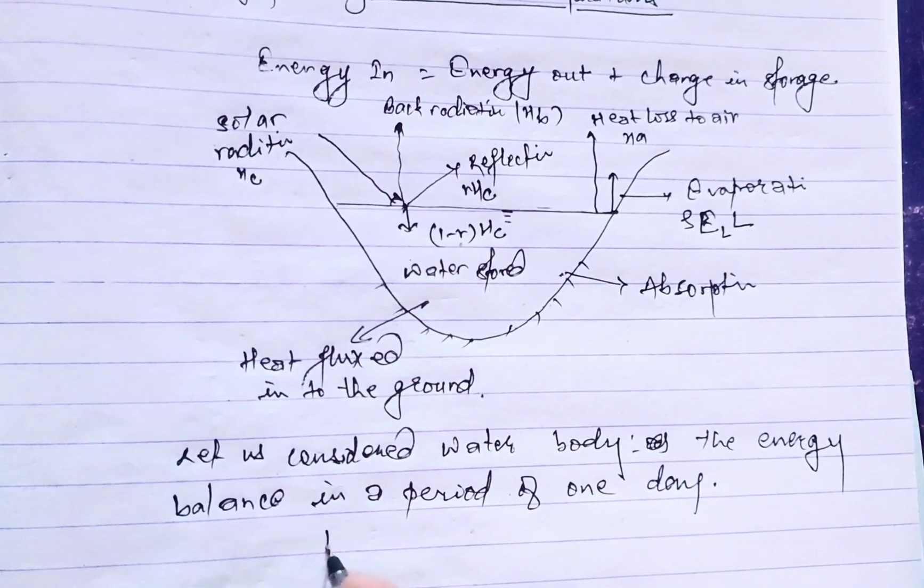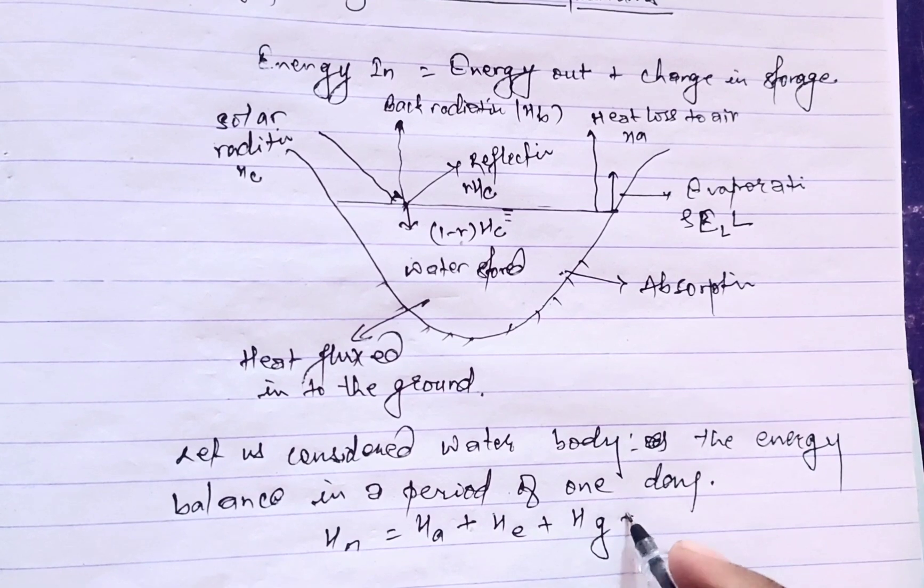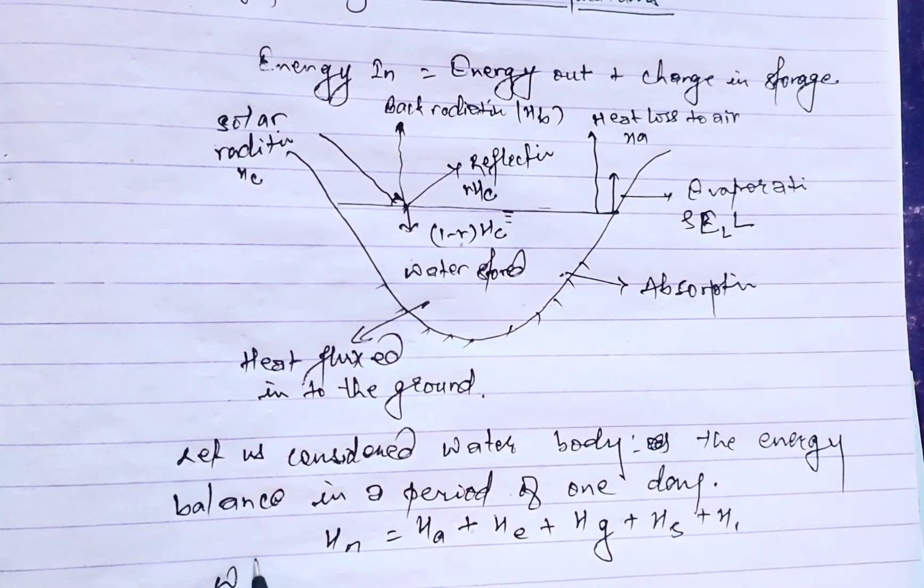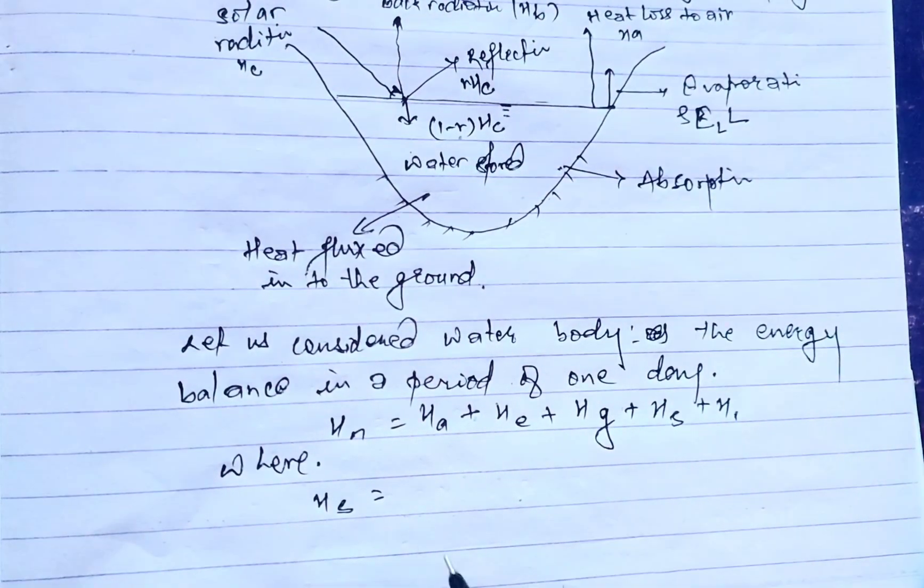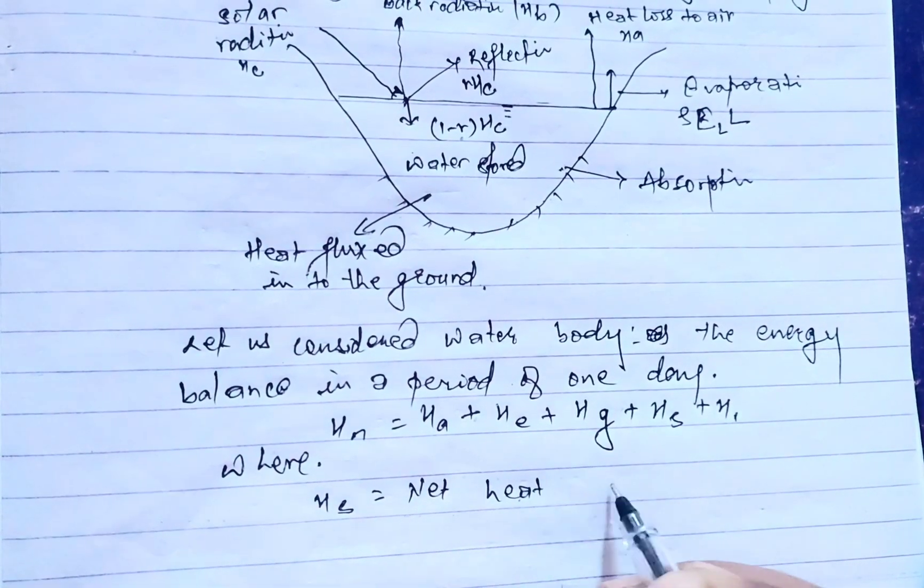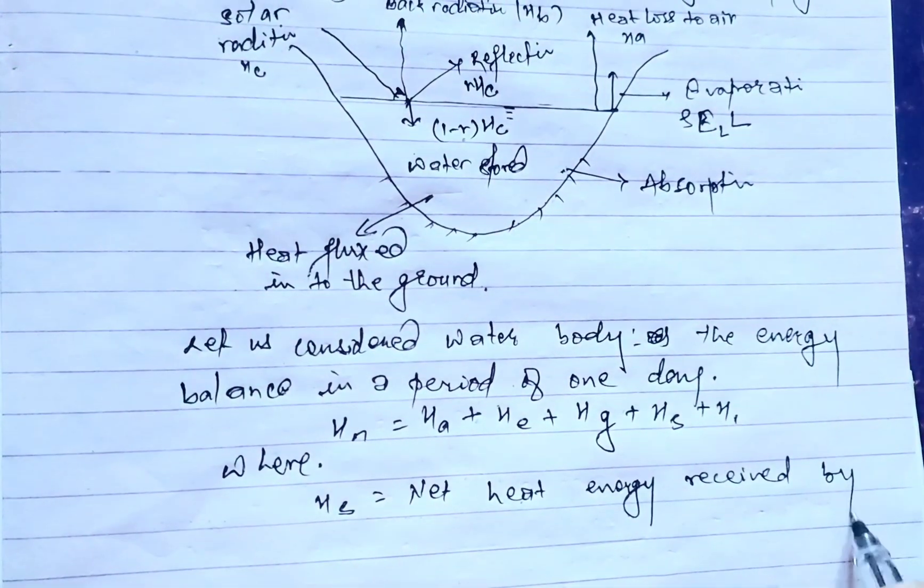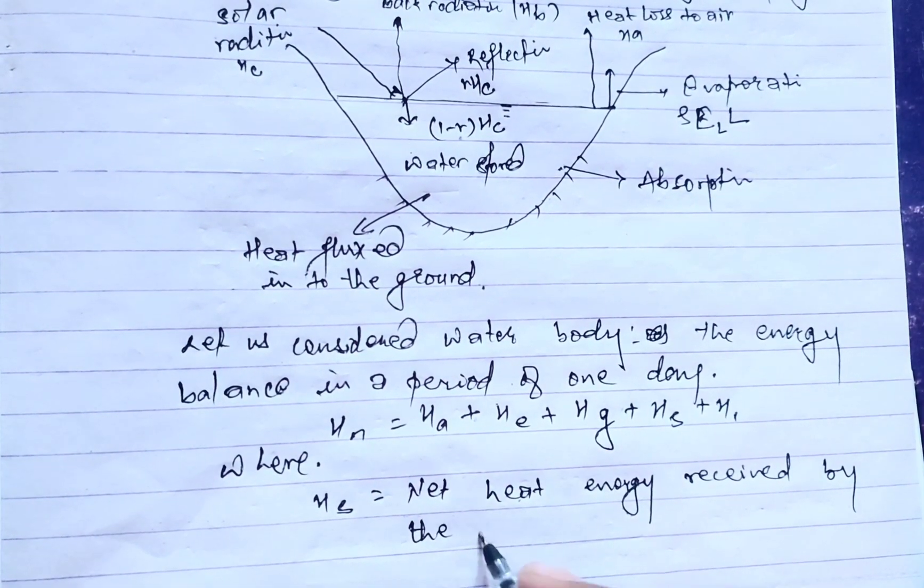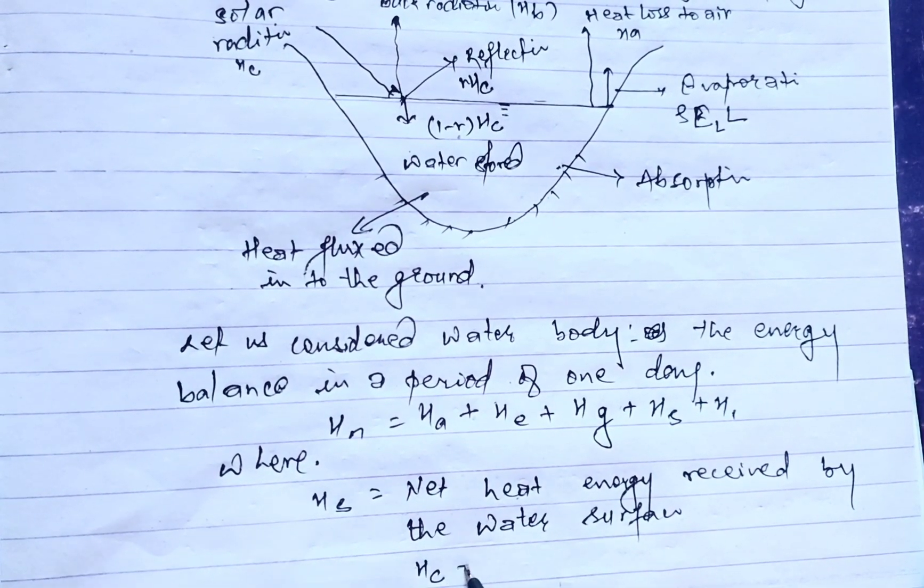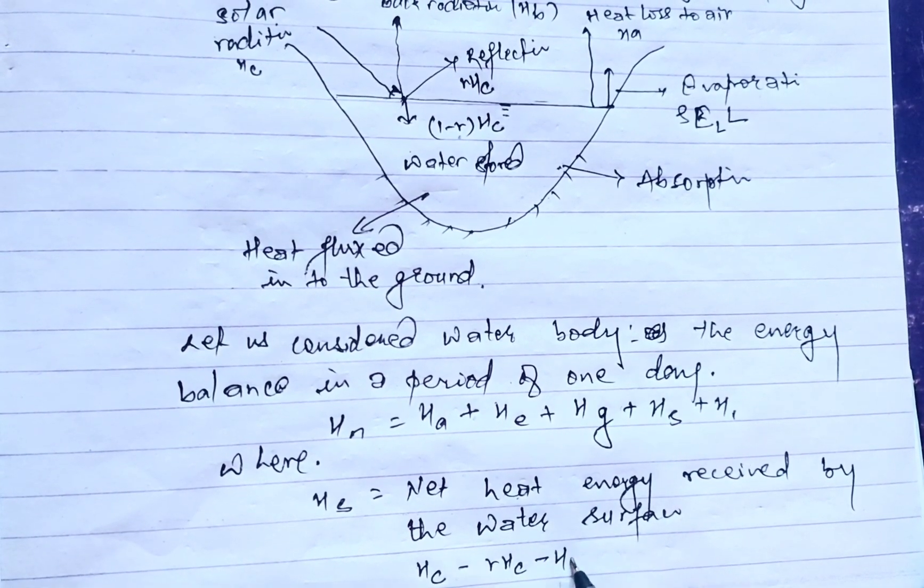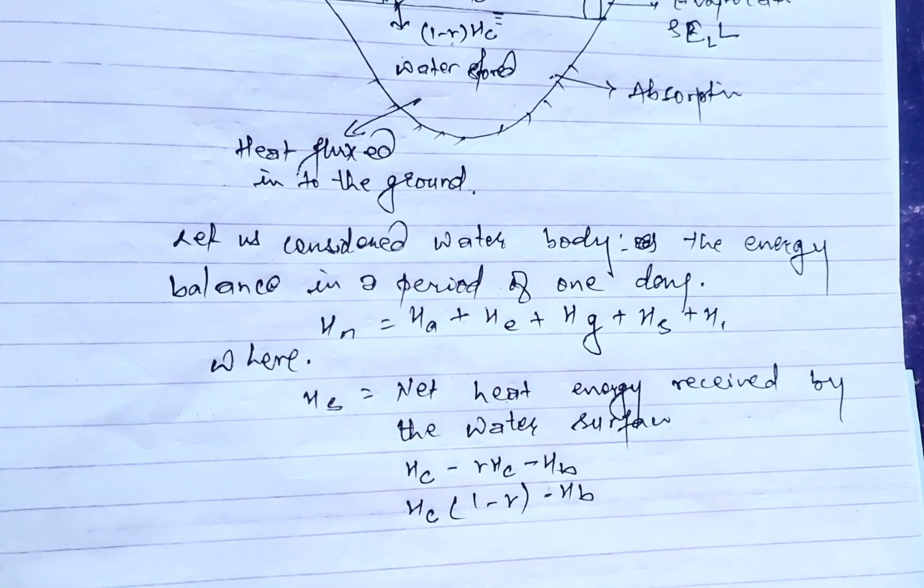Hn = Ha + He + Hg + Hs + Hi, where Hn equals net heat energy received by the water surface, which equals Hc - Hb, or Hc(1-r) - Hb.